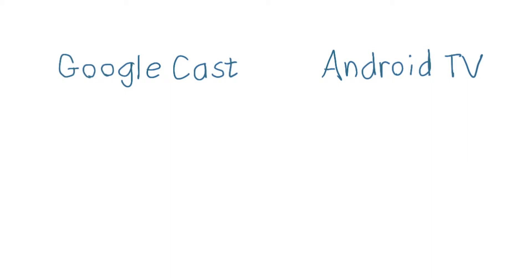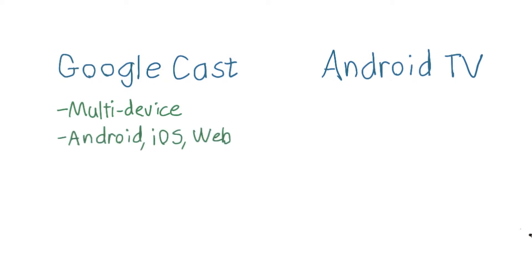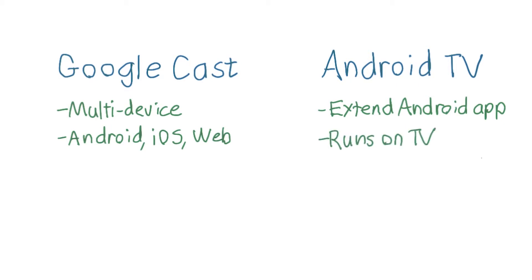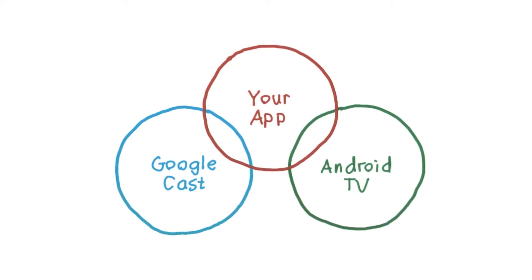Let's start by looking at what each of these platforms offer. Google Cast provides a simple sender-receiver topology, which allows developers to create multi-device experiences integrated with their existing apps on Android, iOS, and the web. Android TV simply takes Android and brings it into the living room. This makes it ideal for extending your existing Android app to work in the living room. You can integrate your service or app with Google Cast, Android TV, or even better, both.